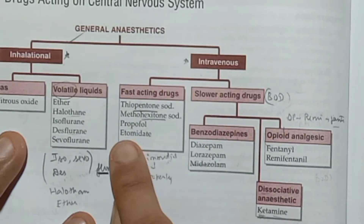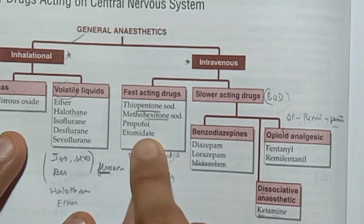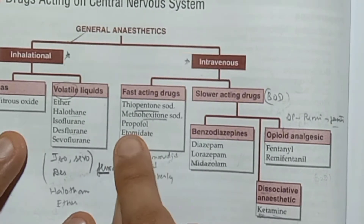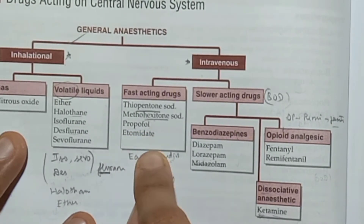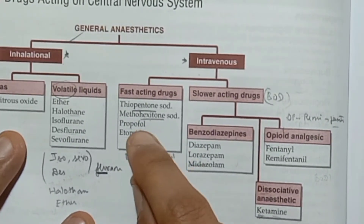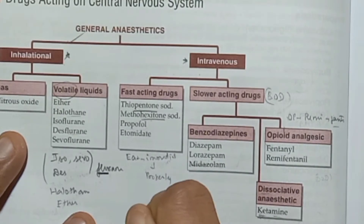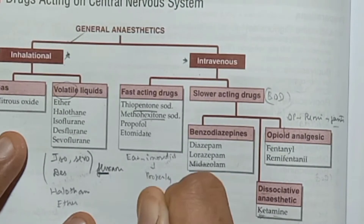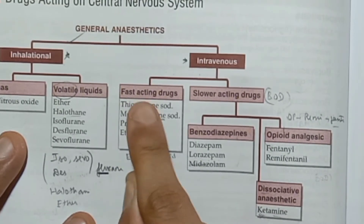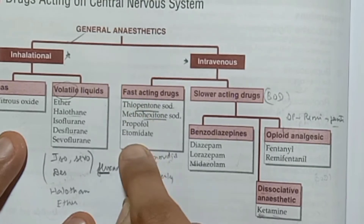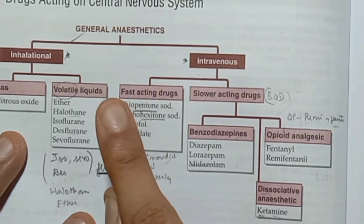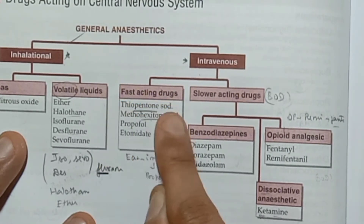For fast-acting intravenous anesthetics, we use propofol and etomidate. Also included are methohexitone sodium and thiopentone sodium.